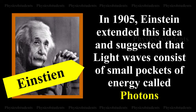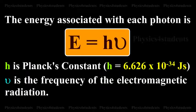The energy associated with each photon is E is equal to H nu, where H is Planck's constant, and nu is the frequency of the electromagnetic radiation.